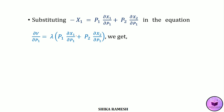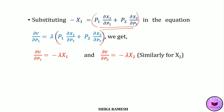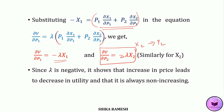Substituting this into the equation for ∂v/∂p1, where the bracket equals −x1, we get ∂v/∂p1 = −lambda·x1. Similarly, differentiating with respect to p2 in the same manner yields ∂v/∂p2 = −lambda·x2. Here lambda is negative, showing that an increase in the price of a good leads to a decrease in the consumer's utility, and utility will always be non-increasing. Whenever price increases, the consumer's utility will always decrease.